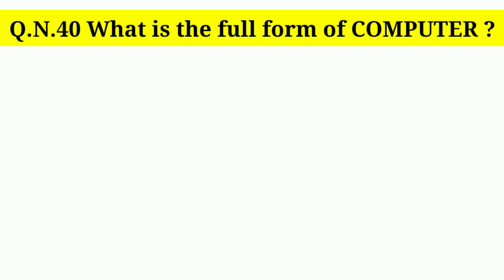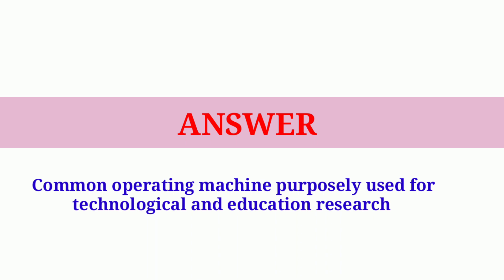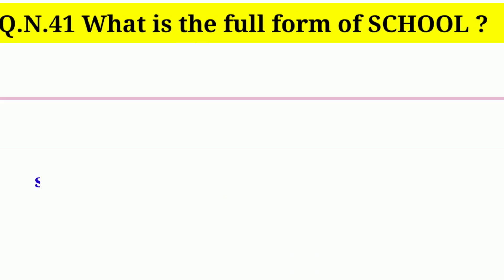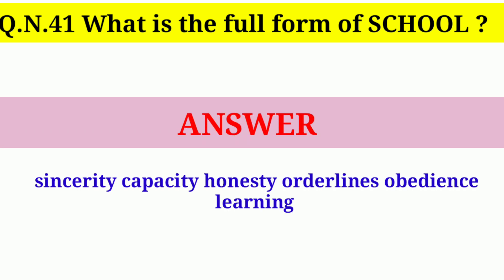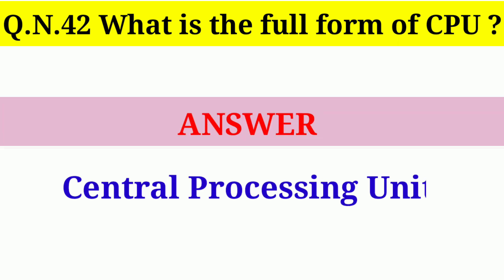Question number 40: What is the full form of COMPUTER? Answer: Common Operating Machine Purposely Used for Technological and Educational Research. Question number 41: What is the full form of SCHOOL? Answer: Sincerity, Capacity, Honesty, Orderliness, Obedience, and Learning. Question number 42: What is the full form of CPU? Answer: Central Processing Unit.